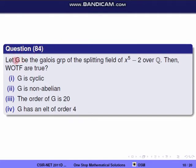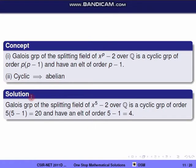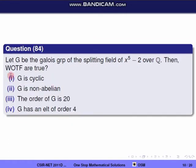Next question, Question 84: Let G be the Galois group of the splitting field of x^5 − 2 over Q. The Galois group of the splitting field of x^p − 2 over Q is a group of order p(p−1), has an element of order p−1, and since it is cyclic it is also abelian. For p=5, G has order 5×4 = 20, has an element of order 4, and G is abelian. The correct options are 1, 3, and 4.